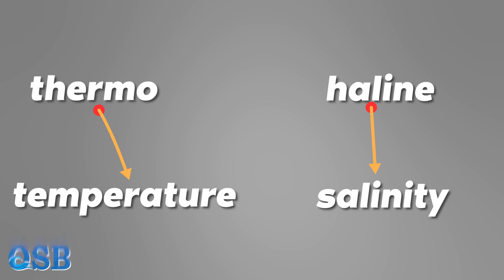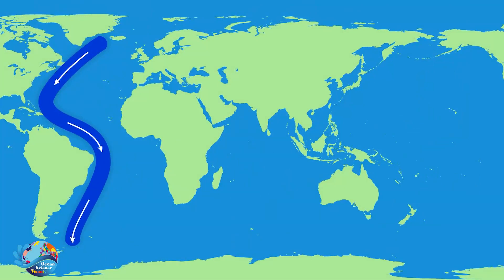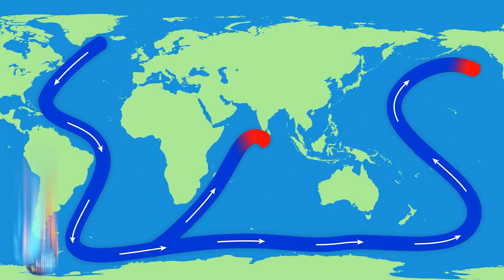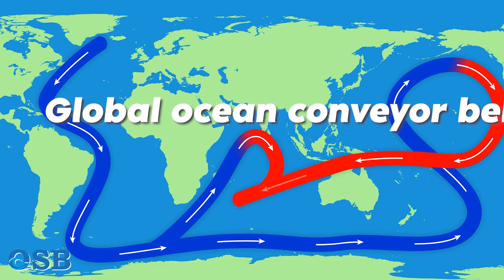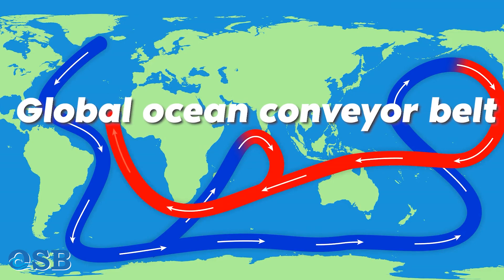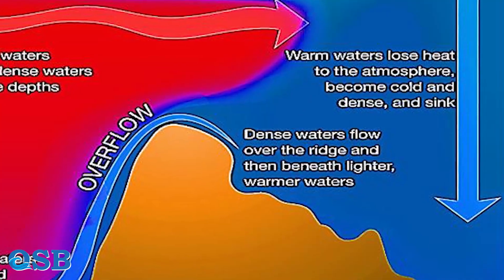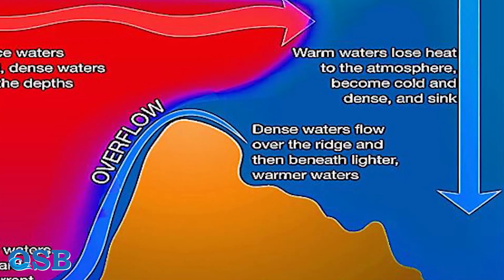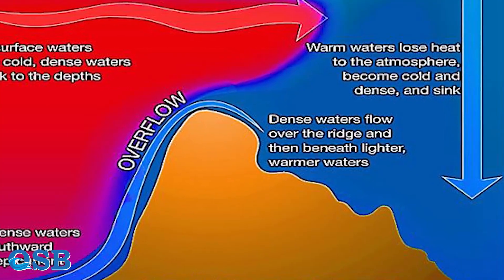This current is a result of the distribution of temperature and salinity in the ocean. A combination of thermohaline currents in the deep ocean and wind-driven currents on the surface — we name this system a global ocean conveyor belt. Here we concentrate on the deep current.